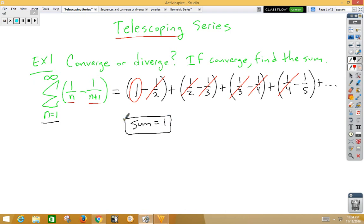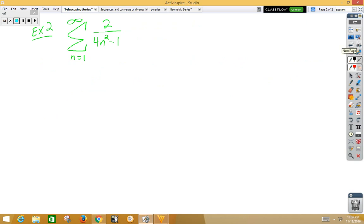Not all telescoping series will be factored for you. This problem reminds us of a partial fractions problem from integration. First, we notice that the denominator factors. Let's factor it as (2n+1)(2n-1).